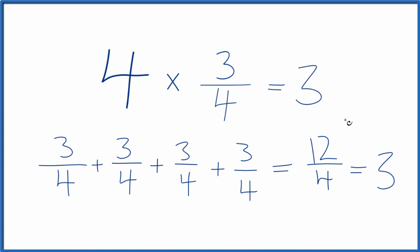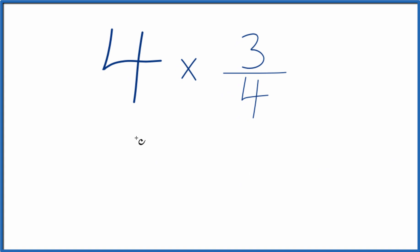Here's another way you could think about this. You could just call 4 4 over 1. 4 divided by 1 is still 4. Then multiply that times 3 fourths.